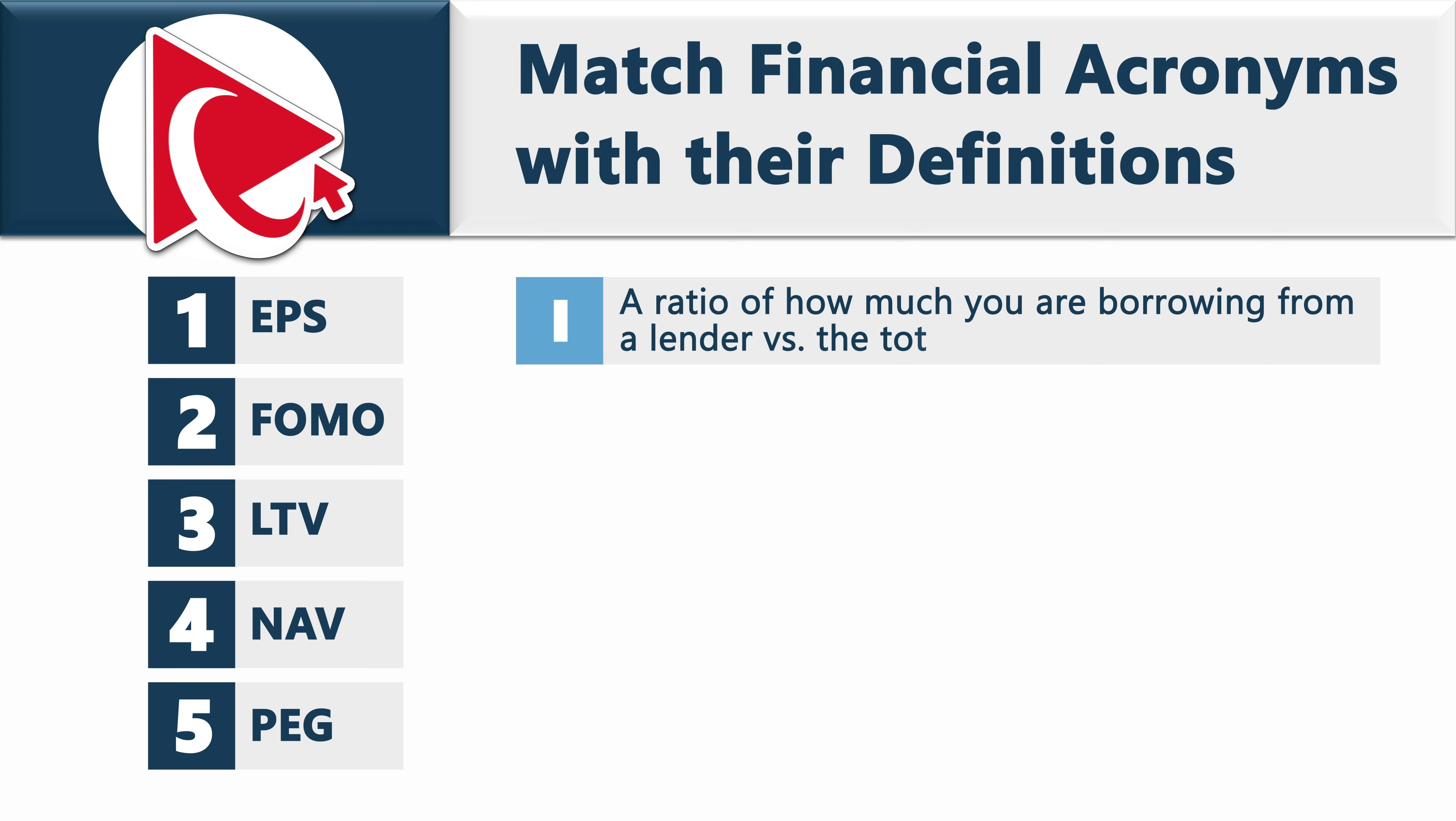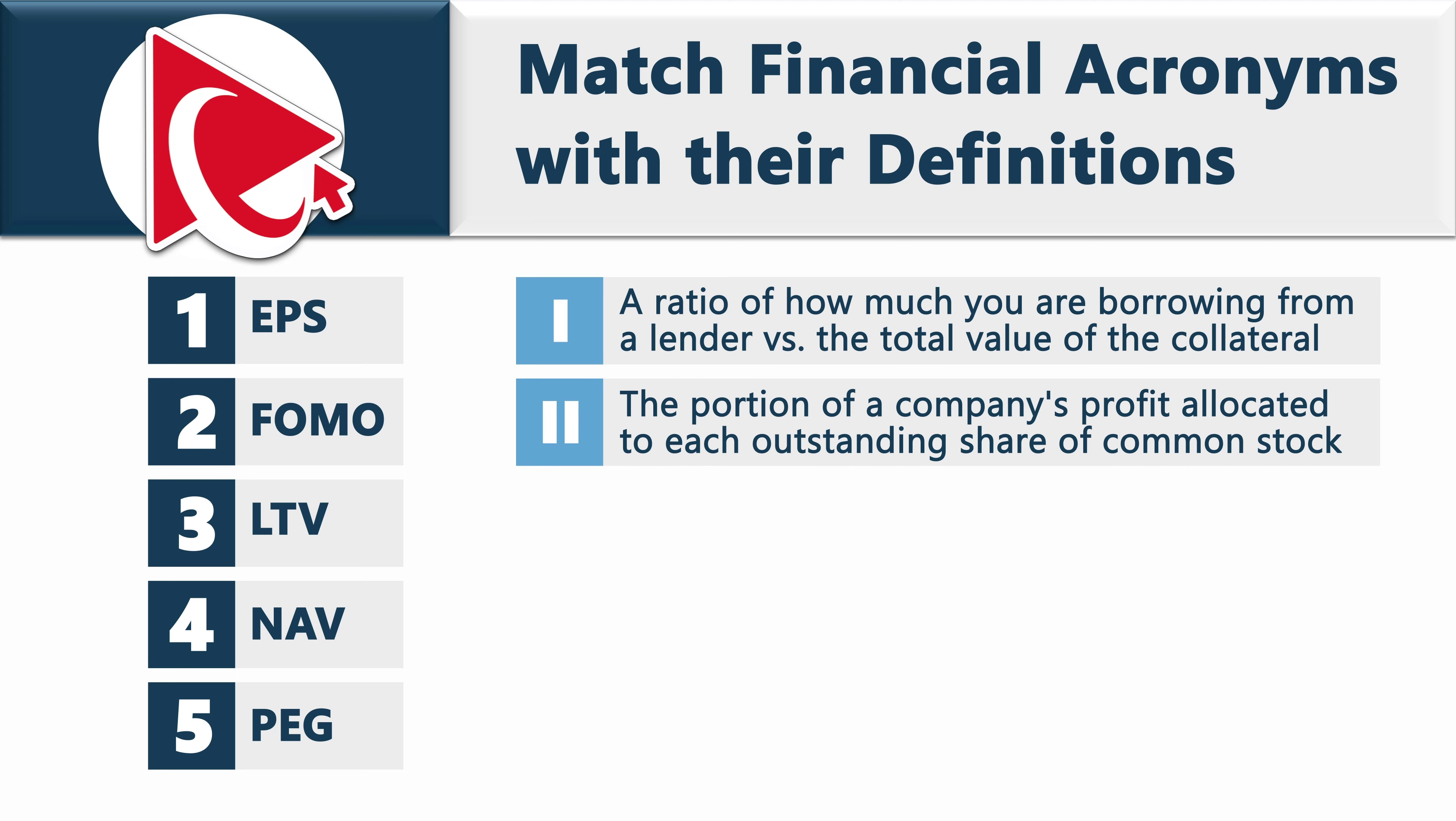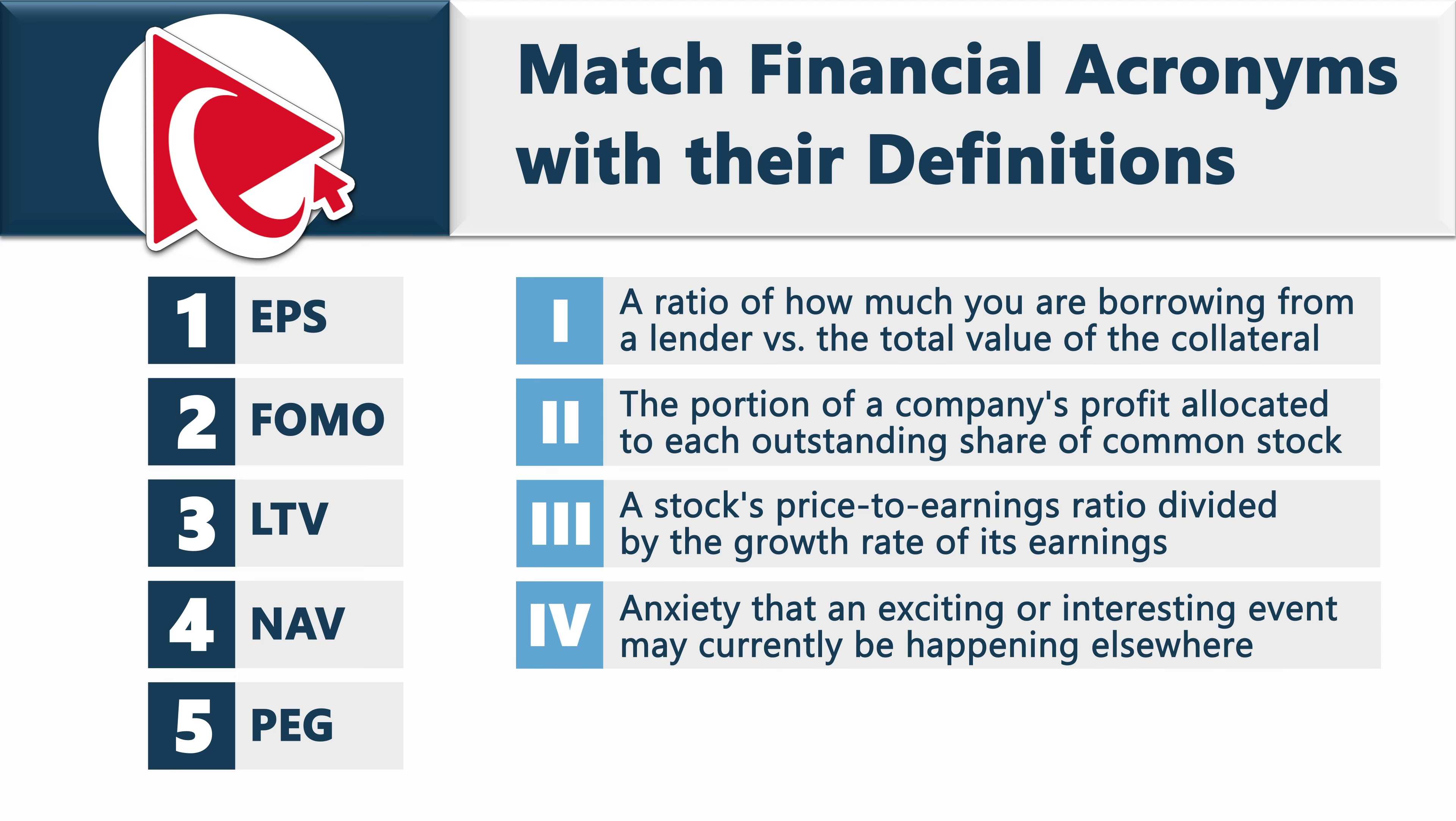And the five choices to match them with are represented by Roman numerals. The first definition is a ratio of how much you are borrowing from a lender versus total value of the collateral. The second definition is the portion of a company's profit allocated to each outstanding share of a common stock. The third definition is a stock price to earnings ratio divided by the growth rate of its earnings. The fourth definition is anxiety that an exciting or interesting event may currently be happening elsewhere. And last but not least, the fifth definition is the value per share of a mutual fund or an ETF.